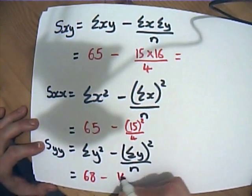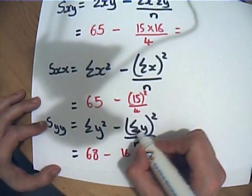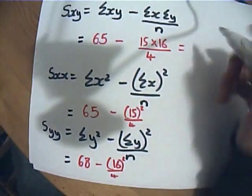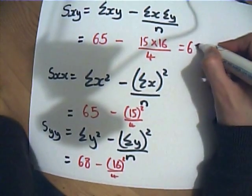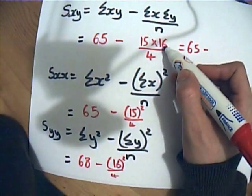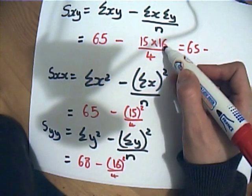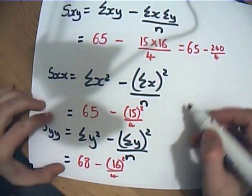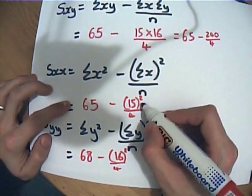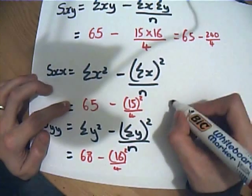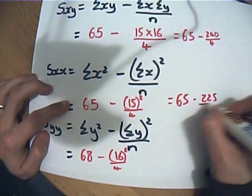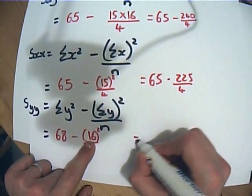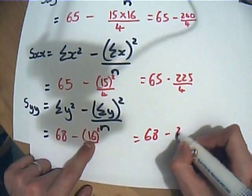Sum of y was 16, but it's the sum of y squared, so we're going to square that 16, divide by 4. Let's see if I can work any of these out. 65 take 15 times 15 is 225, so that's going to be 240 over 4. Let's have a look at this one over here. 15 squared is 225, so this is 65 take 225 over 4. And this one over here, 16 squared is 256, so we've got 68 take 256 over 4.